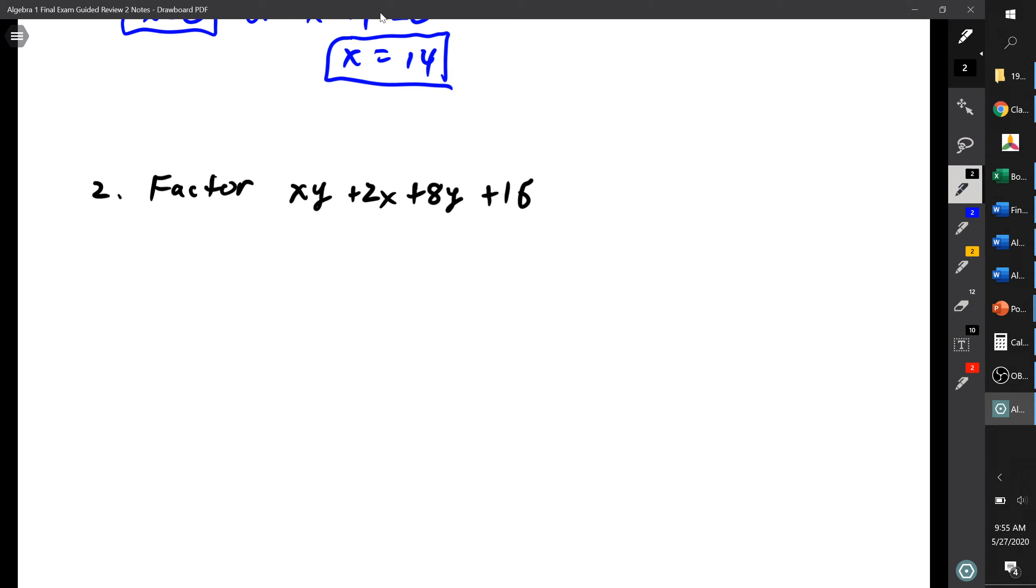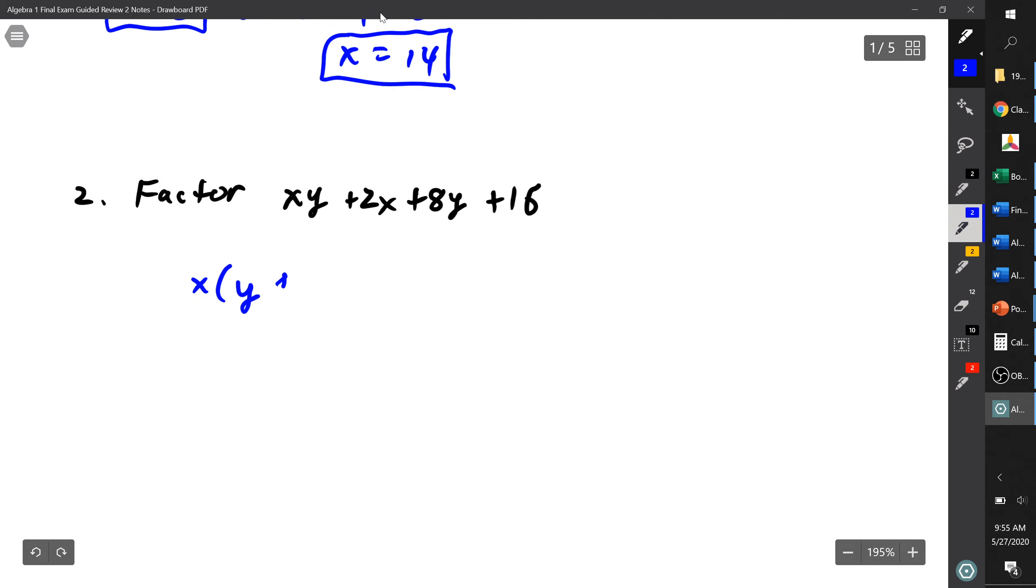But then I look and I see, oh, there are four chunks. Four chunks, I factor by grouping. So let's take the first two, so I'm going to factor this by grouping. I'm going to take the first two and look for what they have in common. Well, they have an x in common, so then when I factor an x out of the first term I get a y. When I factor an x out of the second term I get a plus 2.